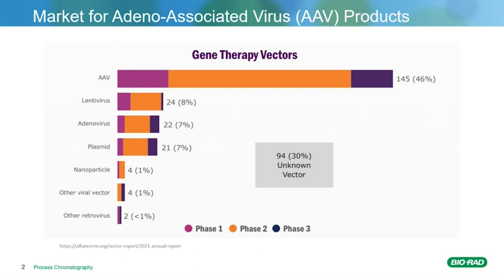I'm going to start out here showing a bar graph showing the market for AAV products. So here you see the gene therapy vector space, and 46% of current trials are using AAV8. There are two approved marketed products using AAV. However, there still is a need for efficient manufacturing capabilities to meet the growing market need for these therapies.